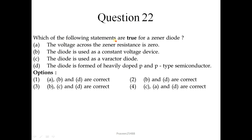Question number 22. Which of the following statements are true for Zener diode? So Zener diode is also known as voltage regulator. The voltage across the Zener resistance is 0. This statement is not correct. The diode is used as a constant voltage device. This is correct. A diode is used as a varactor diode. This is not correct. The diode is formed of heavily doped P and N type. There is again misprint in the question about heavily doped. So I would like to discuss that our Zener diode should be heavily doped. So that for Zener breakdown voltage is low and it will provide the Zener characteristic. So there is no option correct because misprint in the question.